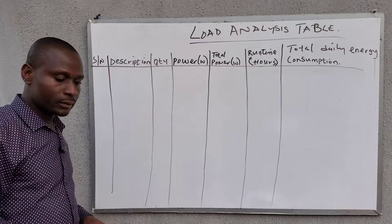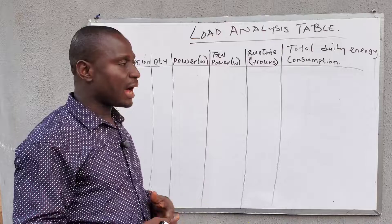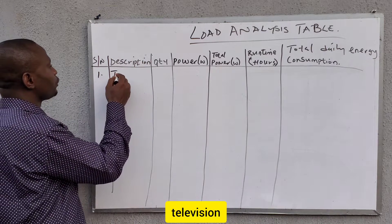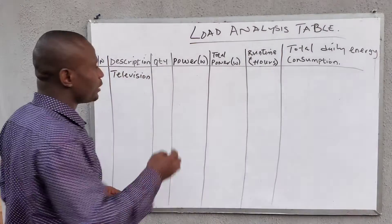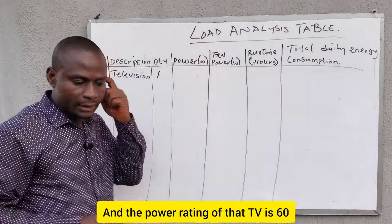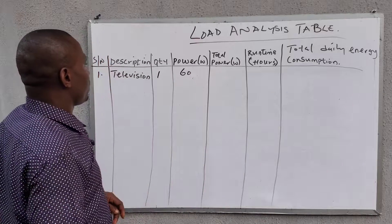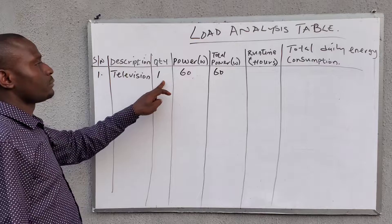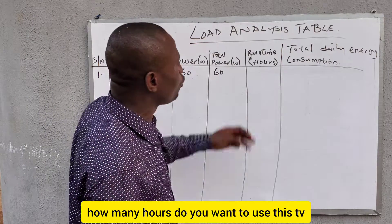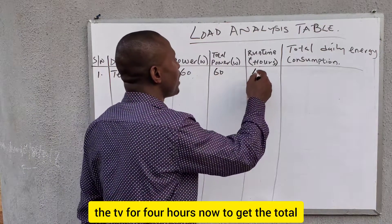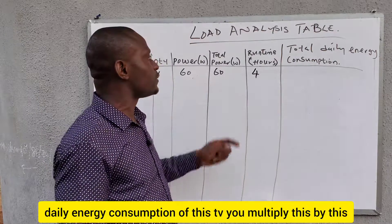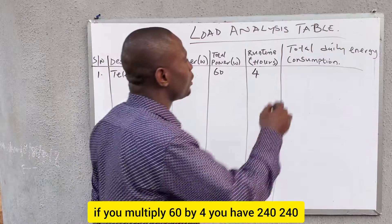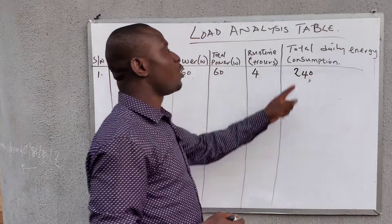For example, after carrying out your load audit, the client has a television — quantity one, power rating 60 watts. The total power is quantity times power: one times 60 equals 60 watts. The client wants to use the TV for four hours a day. So the total daily energy consumption is the total power multiplied by the runtime hours: 60 times four equals 240 watt-hours.